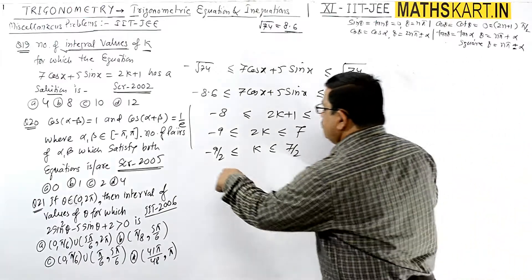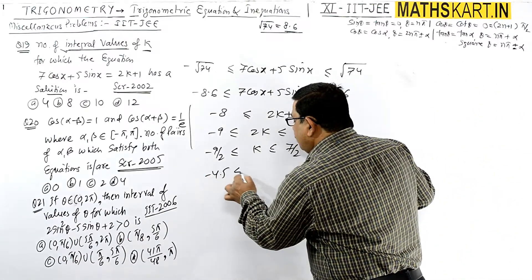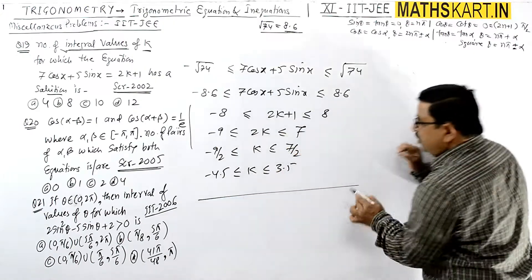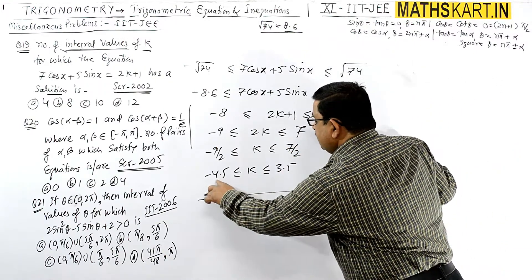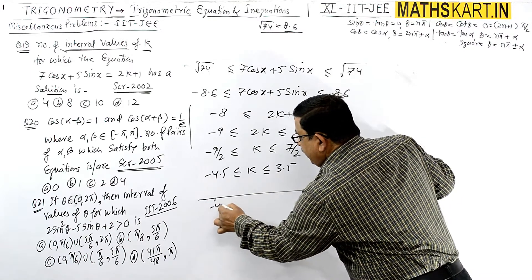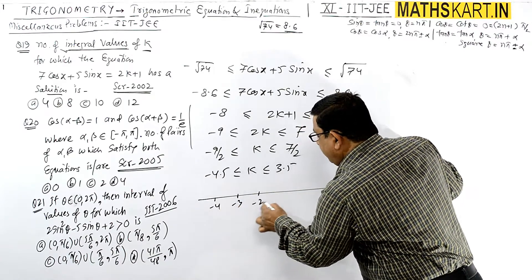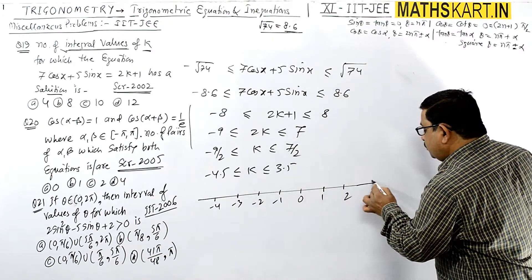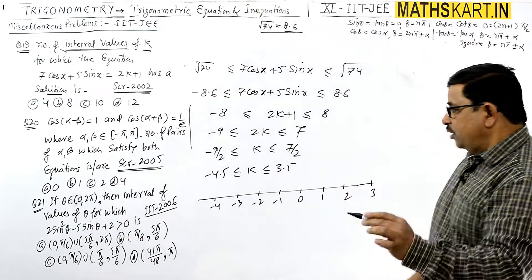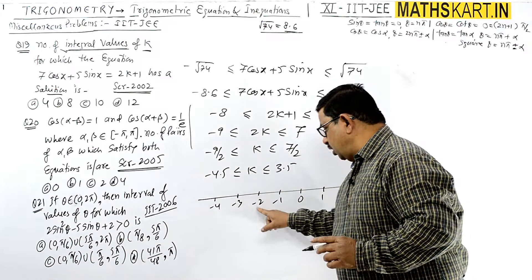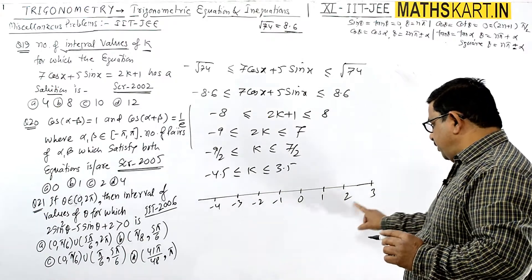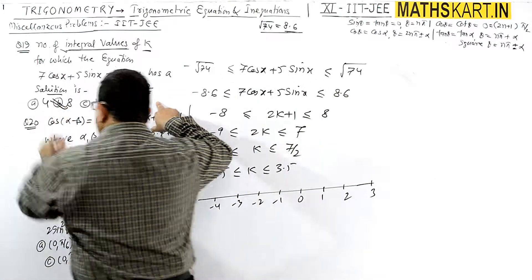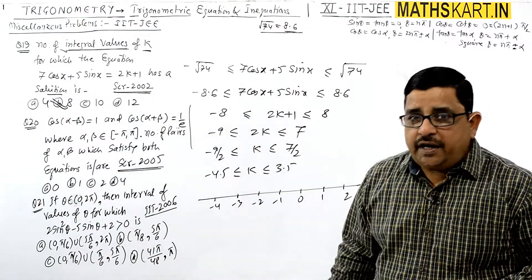k is approaching around minus 4.5 to 3.5. If we write all integer values between these, we get: minus 4, minus 3, minus 2, minus 1, 0, 1, 2, 3. Count them: 1, 2, 3, 4, 5, 6, 7, 8 values. So the answer is 8 - a total of 8 values.